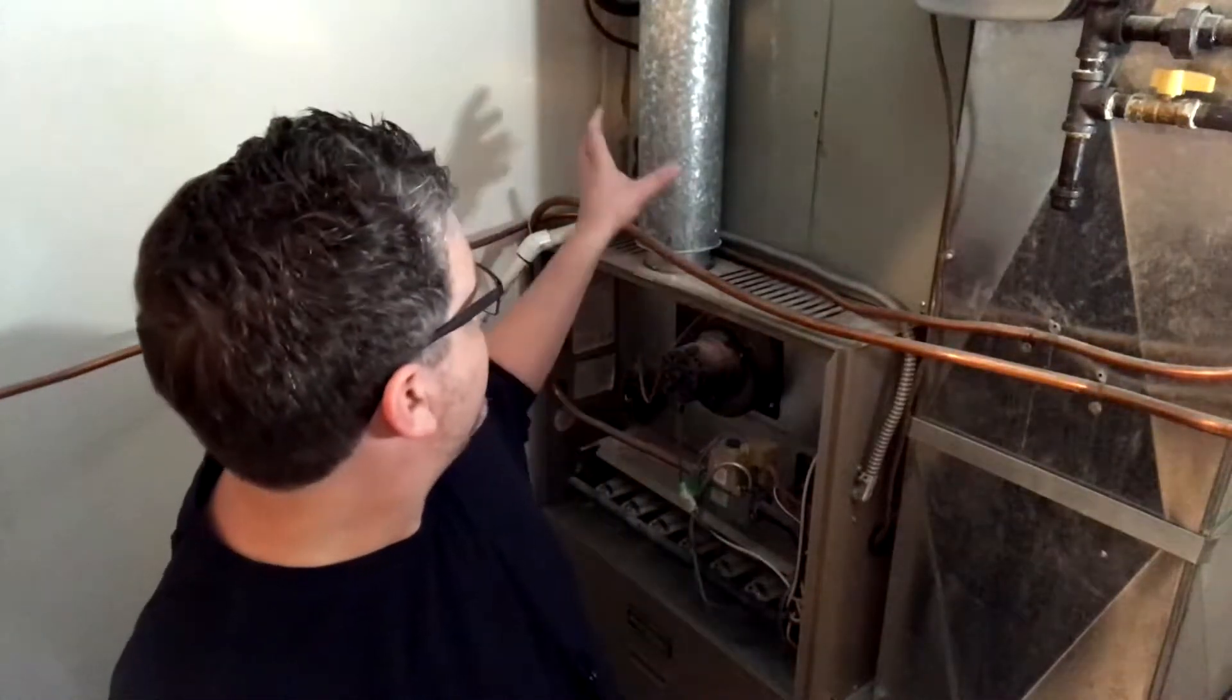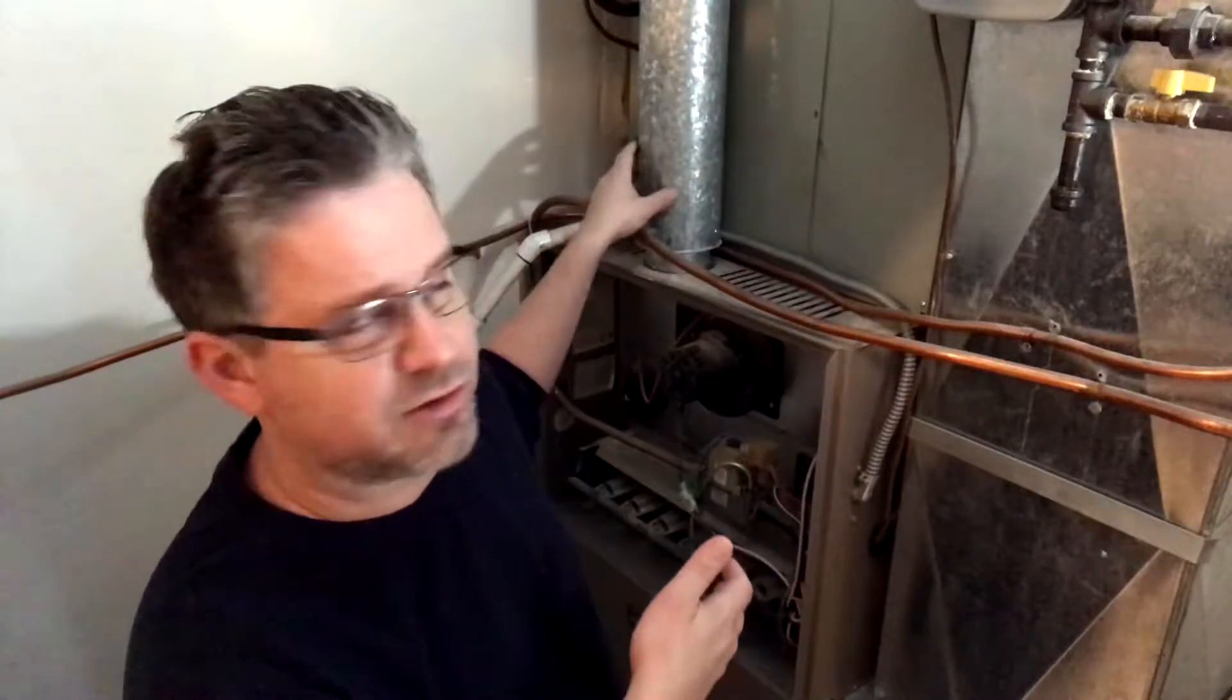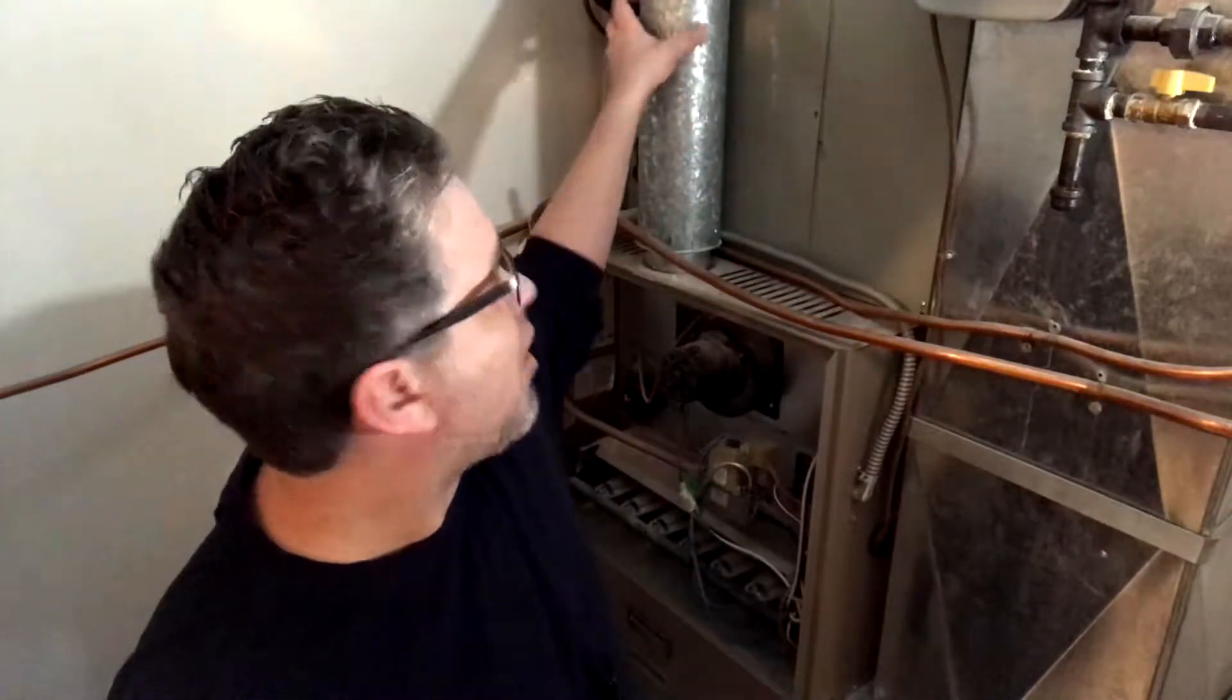Just to kind of quickly go over the real basics of it, this is the exhaust pipe, often called a vent or exhaust. This is where the exhaust from the furnace goes up and out, and it gets real hot. The hotter this exhaust pipe, the lower the efficiency of your furnace.